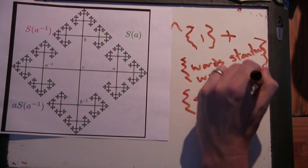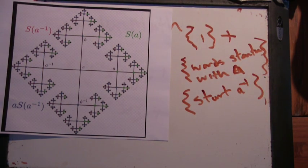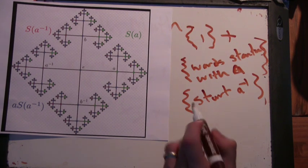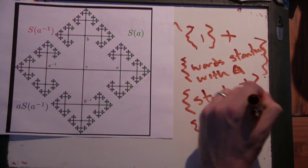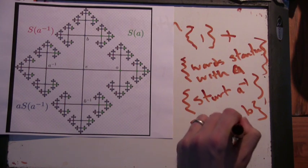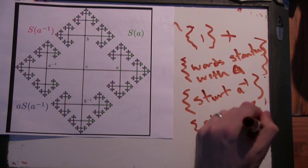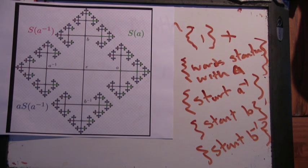Okay. Start with A inverse. So how much of the graph would you say I have now? Probably a half. Okay. And then you could do those two that start with B, and then B inverse. Start with B.